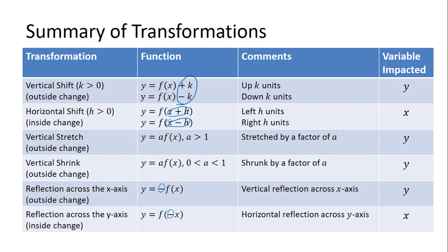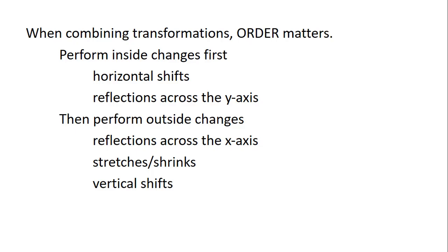It's important to note what's changing through these transformations — are we impacting the output or the input? When you combine transformations, the order that you perform them matters. We need to perform inside changes first, things like shifting left and right or reflecting across the y-axis. Then we perform the outside changes, which are reflecting across the x-axis, stretches and shrinks, and vertical shifts.